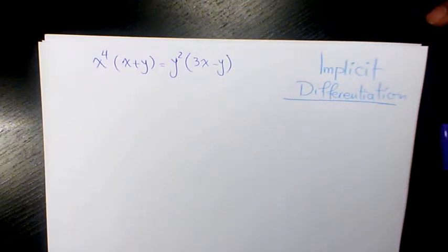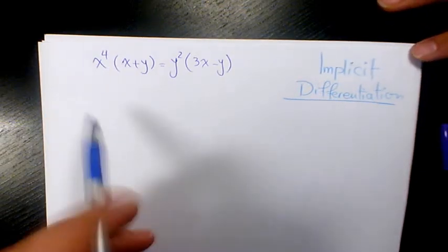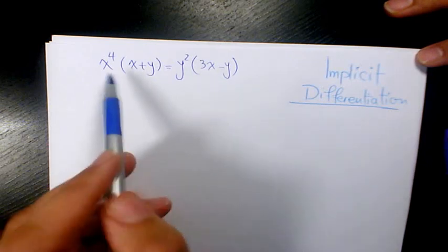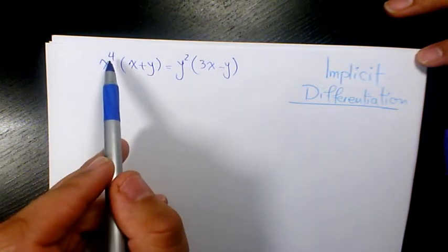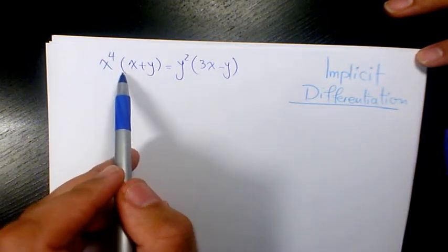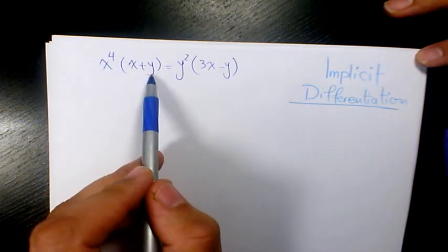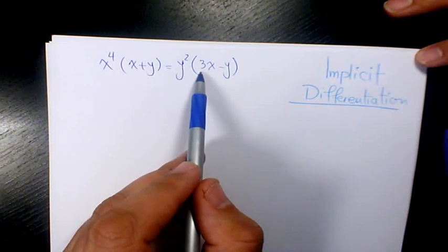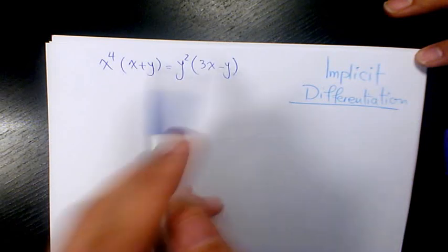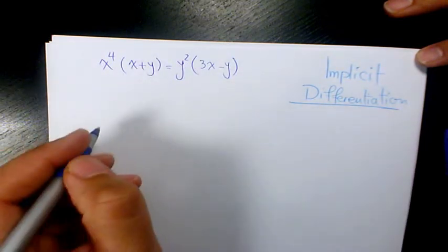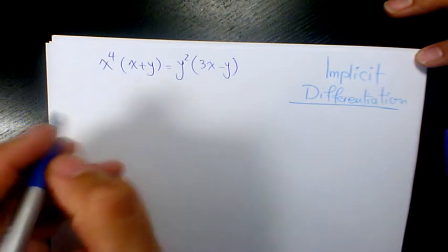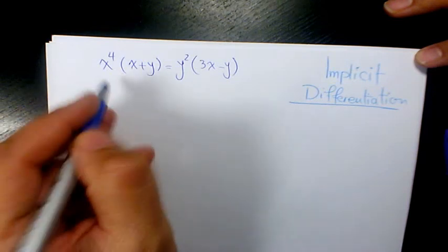What's up guys, this is Massey, welcome to another video. In this video I want to show you how to find the derivative of x to the power of 4 times x plus y equals y squared times 3x minus y. I need to find the derivative — I'm going to use implicit differentiation.